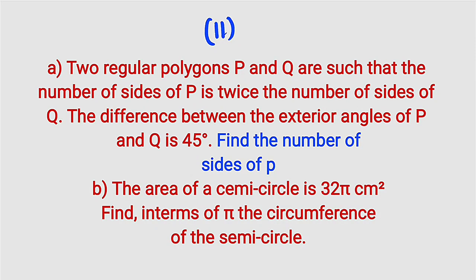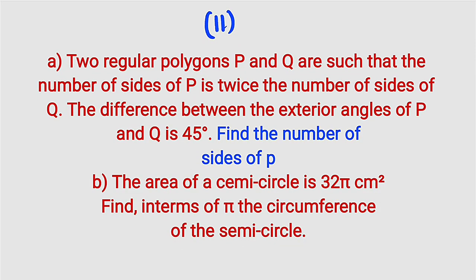Hello, good day viewers. Here is question number 11 of YEC 2023 mathematics examination. It consists of parts a and b. The first question is related to regular polygons while the second one involves a circle. The first question reads: two regular polygons P and Q are such that the number of sides of P is twice the number of sides of Q, and the difference between the exterior angles of P and Q is 45 degrees.